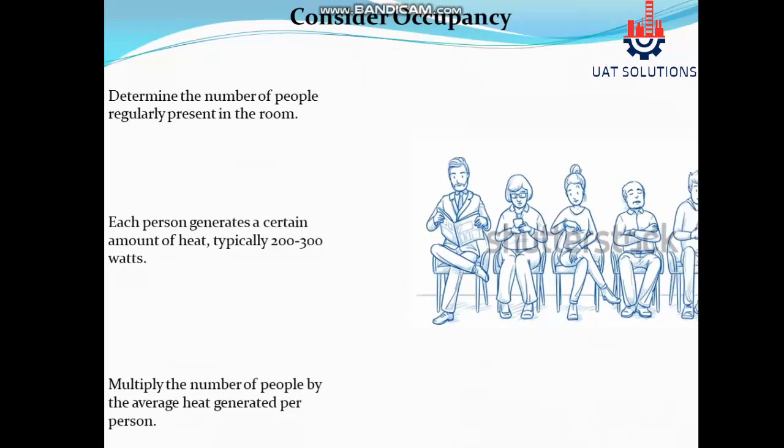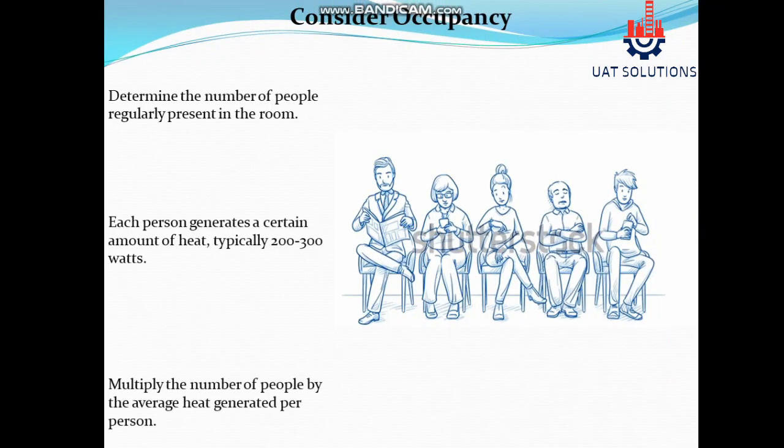Consider occupancy: determine the number of people regularly present in the room. Each person generates a certain amount of heat, typically 200 to 300 watts. Multiply the number of people by the average heat generated per person to get the total occupancy heat load.